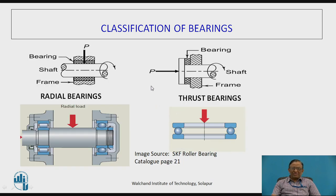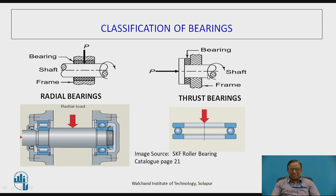Further, these bearings are classified as radial bearings and thrust bearings. In case of radial bearings, we find a radial load that is perpendicular to the axis of the bearing or perpendicular to the axis of the shaft. In case of thrust bearings, the load is acting along the axis of the shaft or axis of the bearing. So accordingly, there is a change in some constructional requirements.